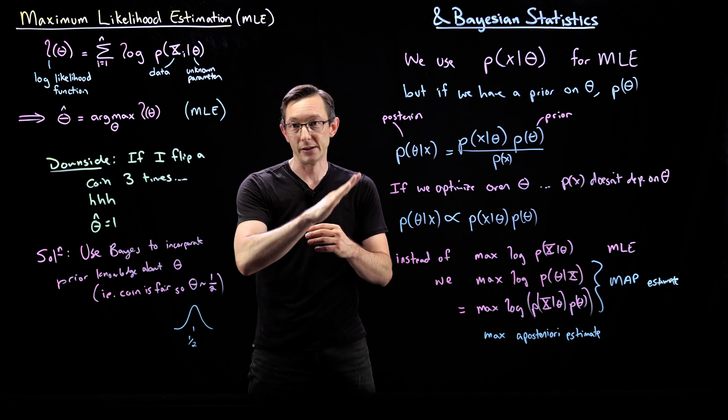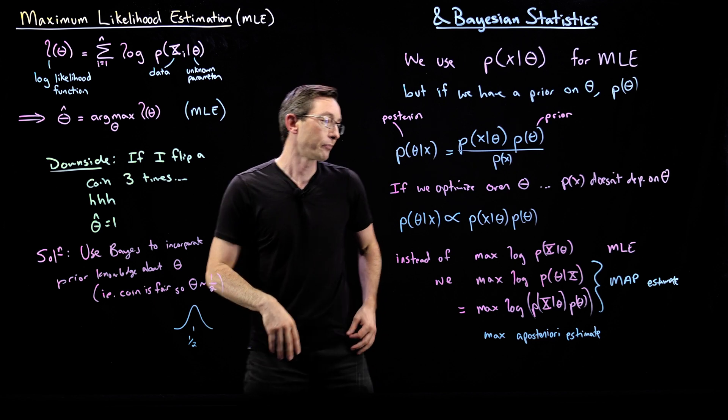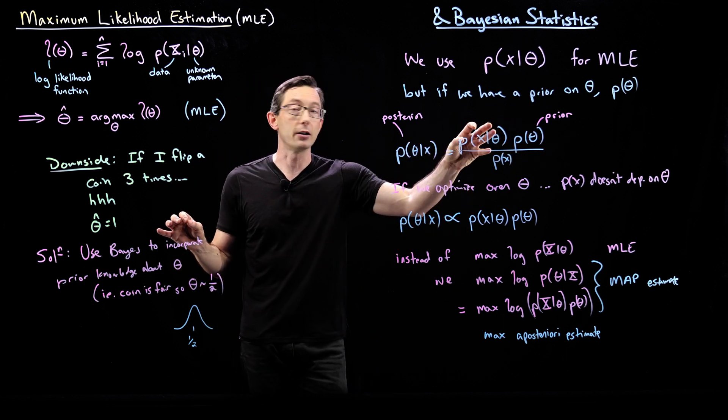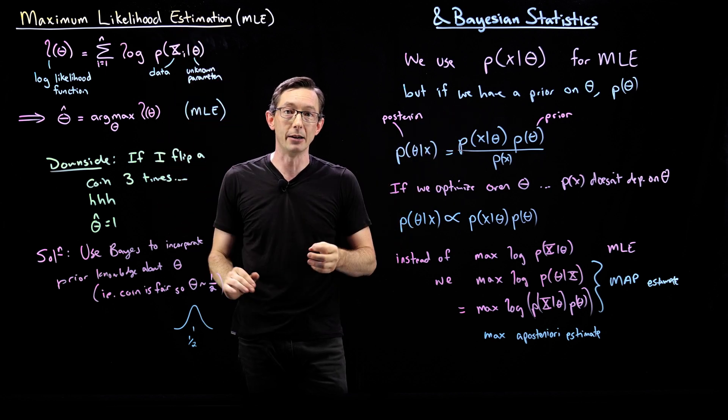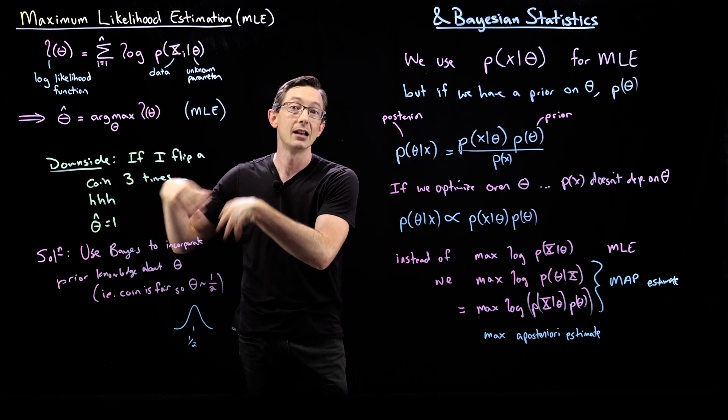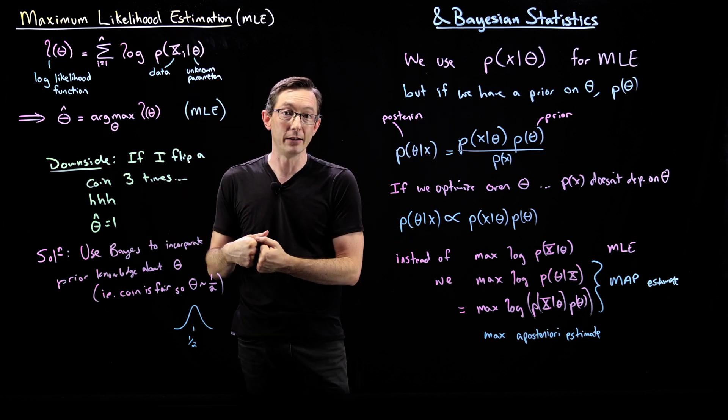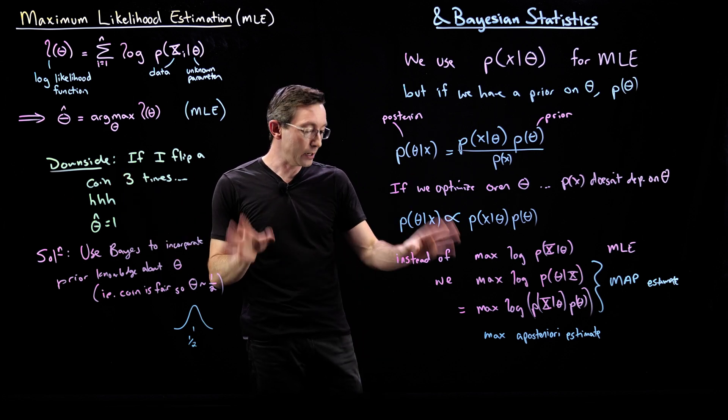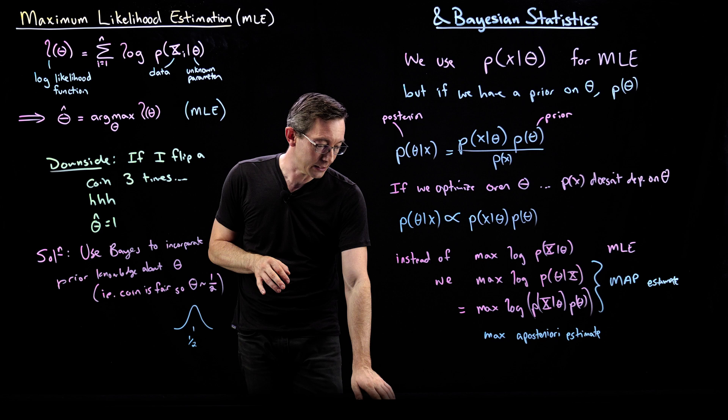And Bayesian informed estimation where there's some prior knowledge baked in. Maybe that the intercept is zero or something like that. And so this is a really clever and simple way of incorporating prior knowledge into the maximum likelihood estimation to make it more robust to bad unlucky draws of the data and other things. Outliers, malicious attacks, things like that. Really useful idea here.